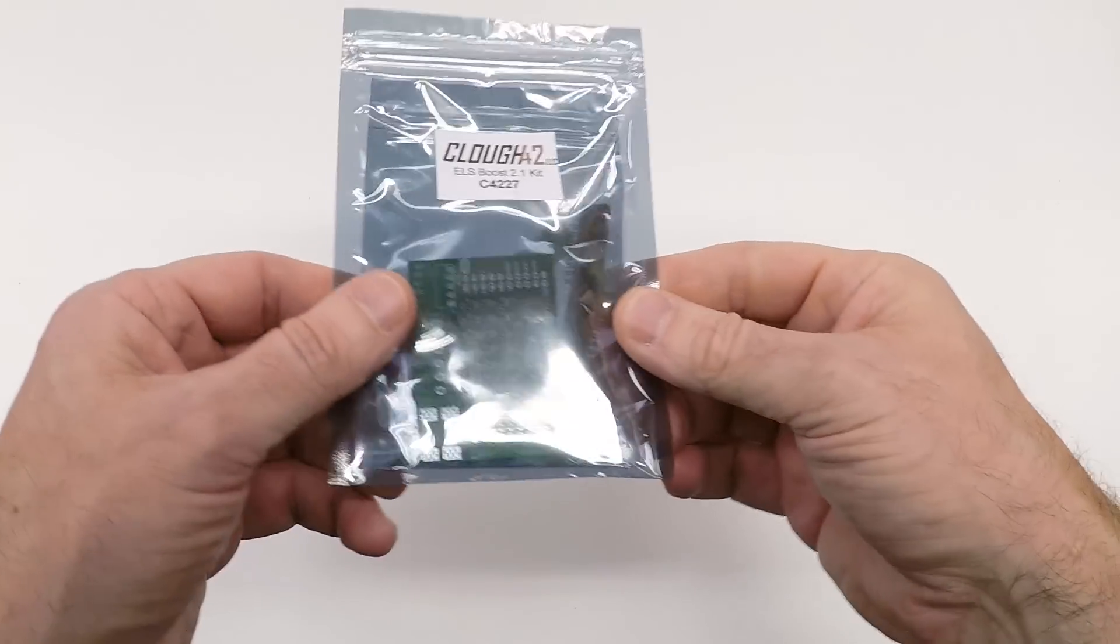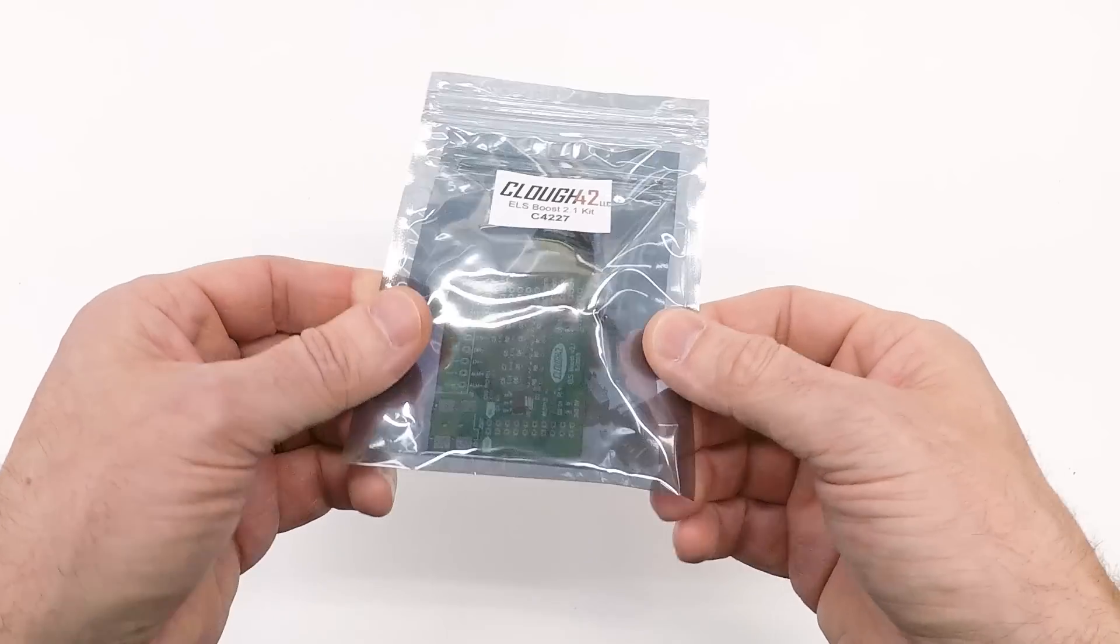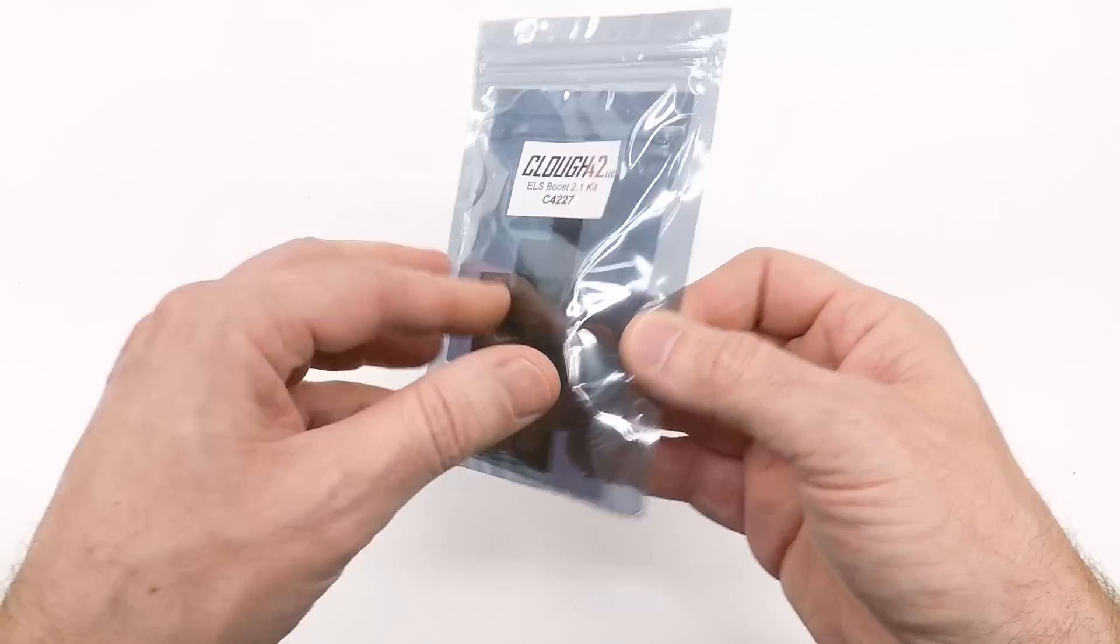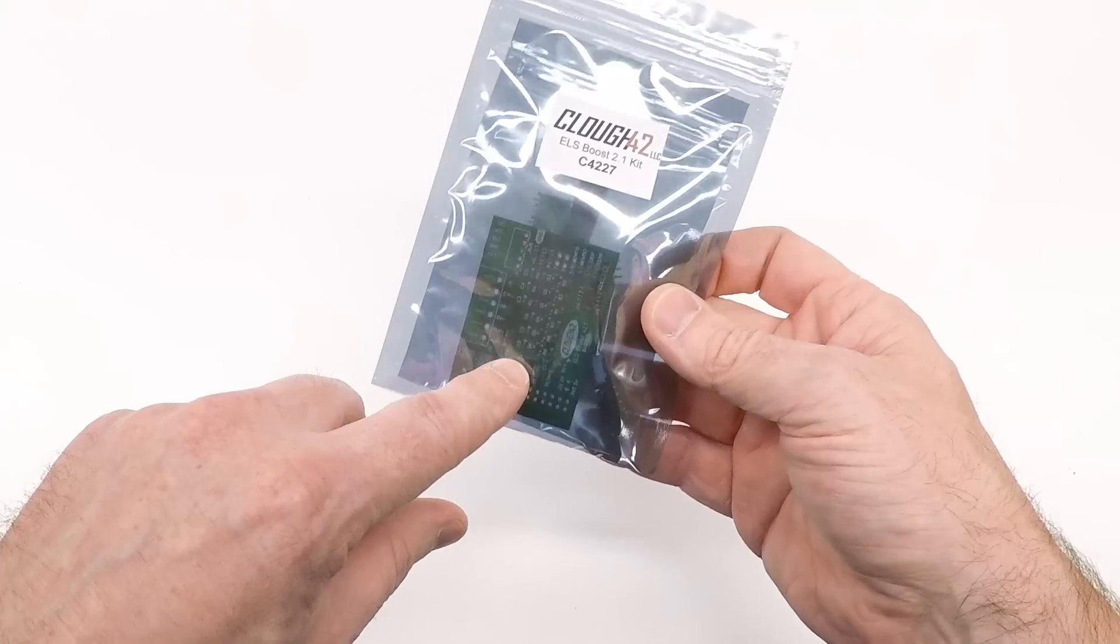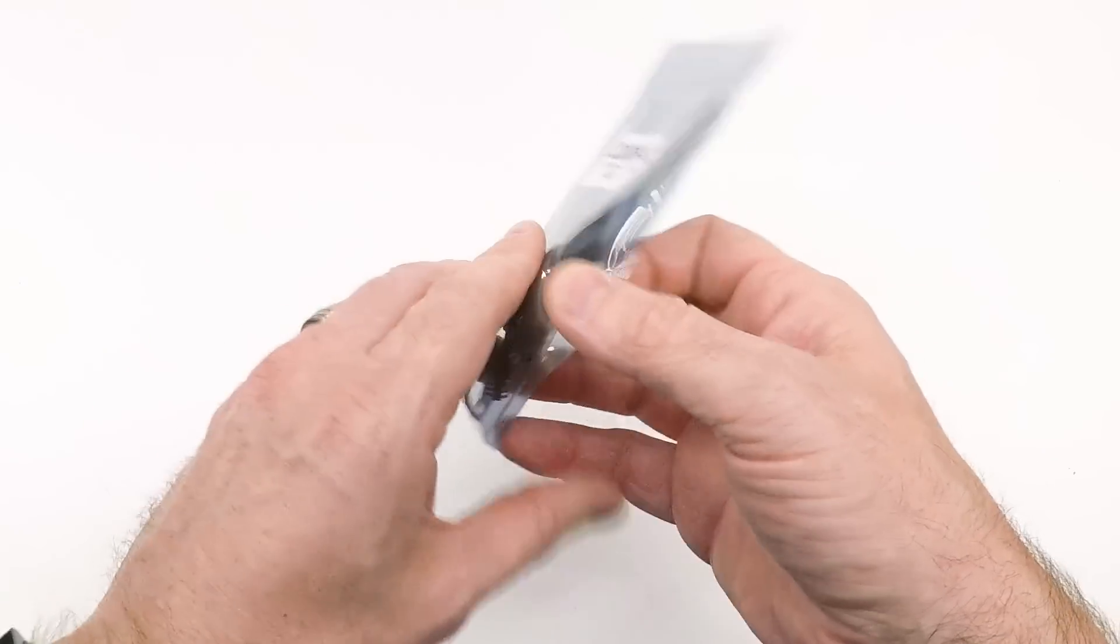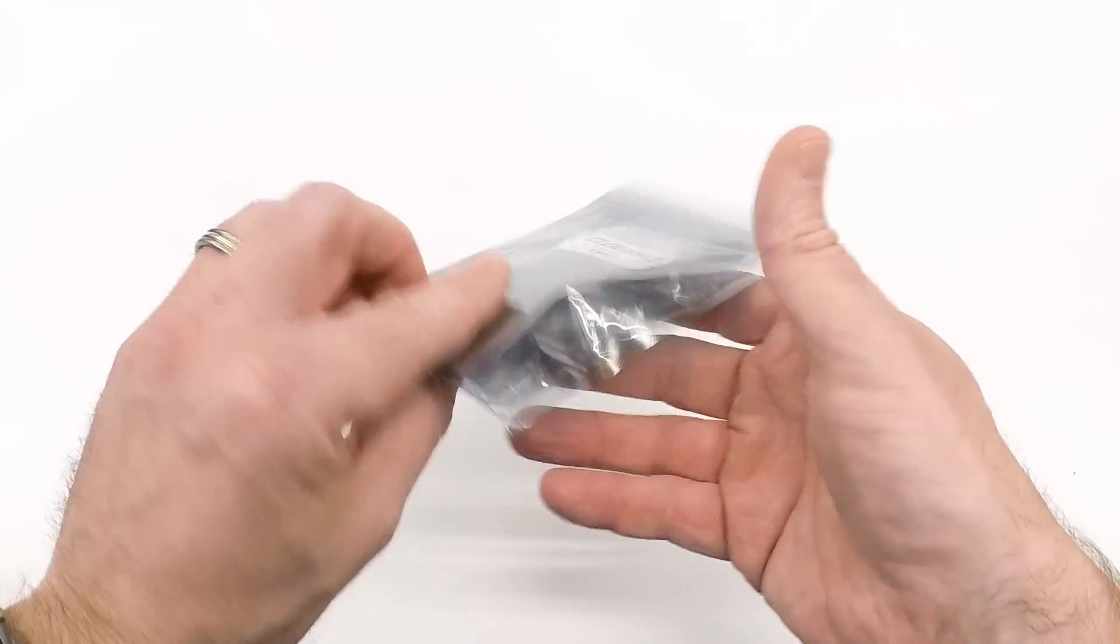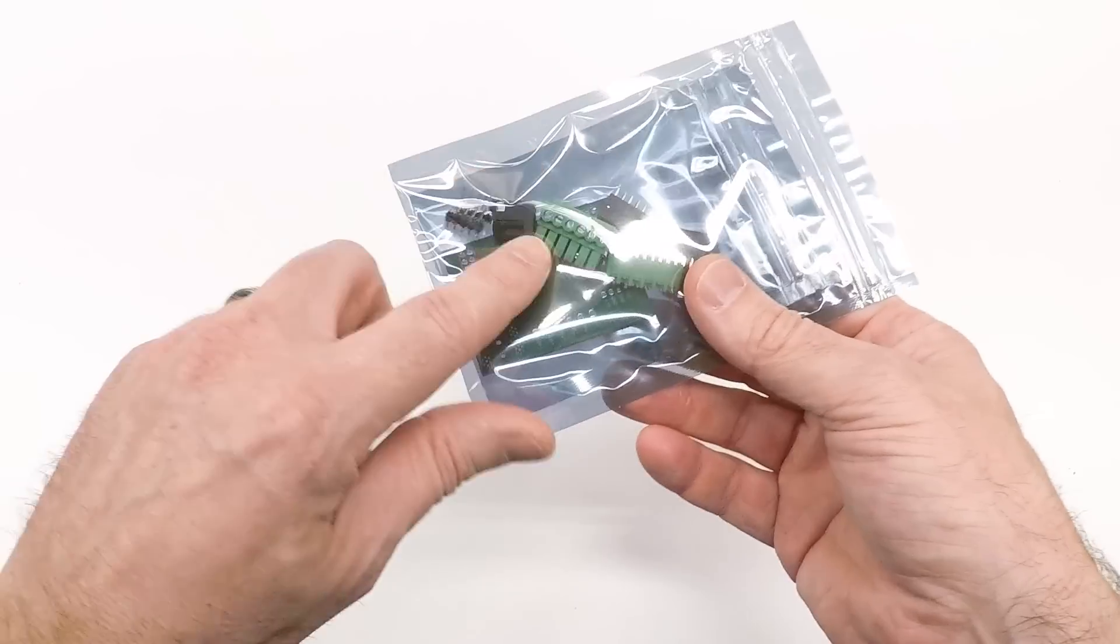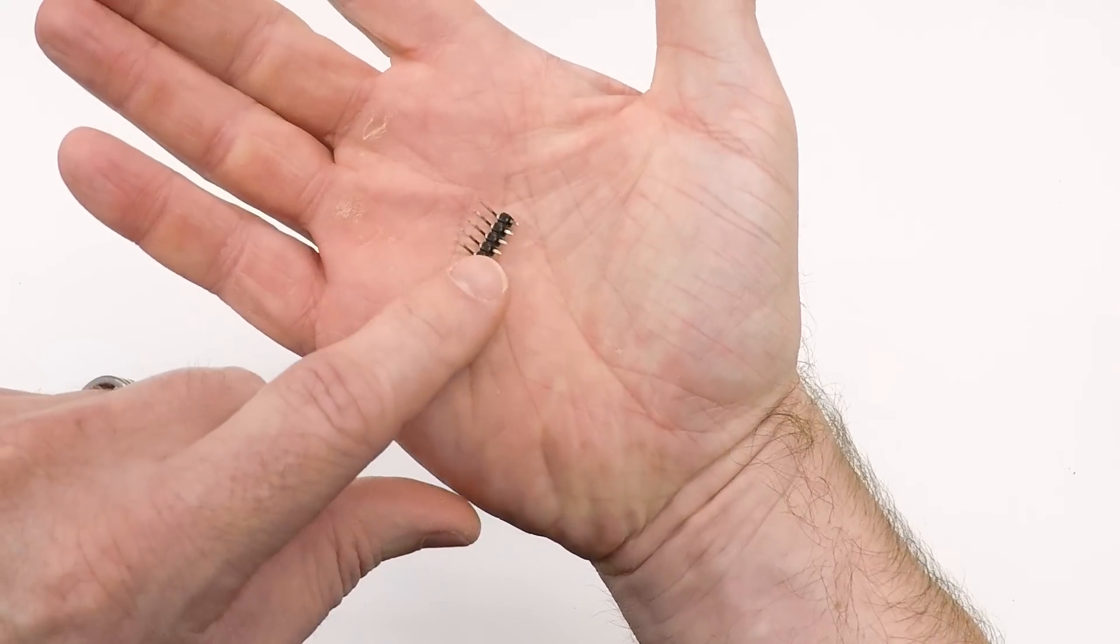If you've been around the channel for long, you know that I have an electronic lead screw project and I sell these little PC board kits for people that want to put them on their own lathes. The kit contains a PC board and a bunch of connectors. A few of these connectors need to be soldered onto the board to make it work, and one of those connectors is a five pin right angle header. In fact, there's two of these in the kit.